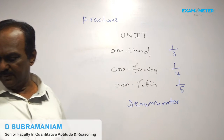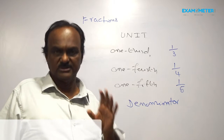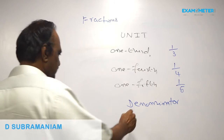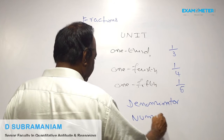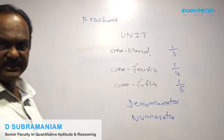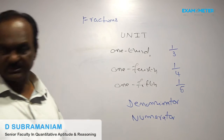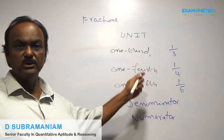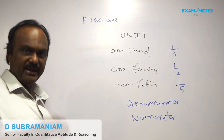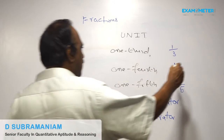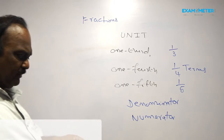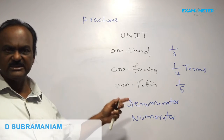The upper number which indicates the number of parts taken to form the fraction is called the numerator. The numerator and denominator of a fraction are called its terms.